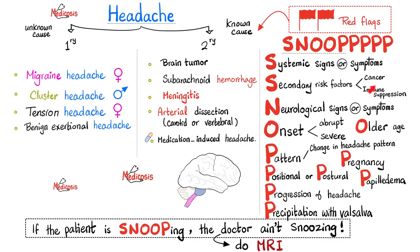Secondary risk factors such as cancer or immunosuppression are red flags when they come with a headache. Neurological signs and symptoms that resemble a stroke or other disease — red flag. Severe abrupt onset of headache — red flag. Headache in older people, headache that changes in pattern, headache during pregnancy, headache that changes when you change position, headache with papilledema, headache that precipitates with Valsalva — all red flags. If the patient is SNOOPing, the doctor ain't SNOOZing — you better take these complaints seriously.